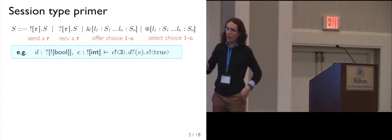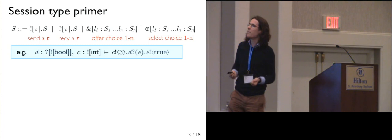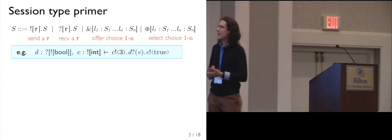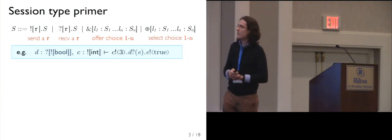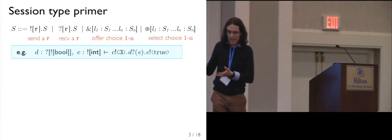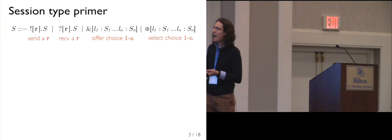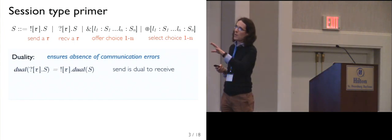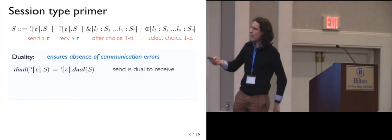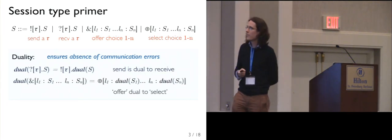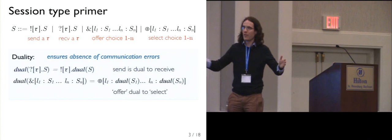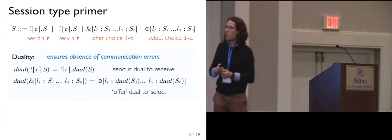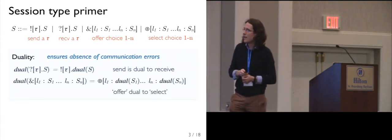There's a notion of alternative behavior — you can offer a choice between N labels, a bit like a variant, or you can select a choice from amongst different behaviors. Core to the session type idea and how it guarantees communication safety is the notion of duality, which relates sending, receiving, offering, and selecting. The dual of a receive type is a send type, and we can define this dualizing function recursively. Similarly, the dual of offering a number of label choices is that someone selects one of those choices.